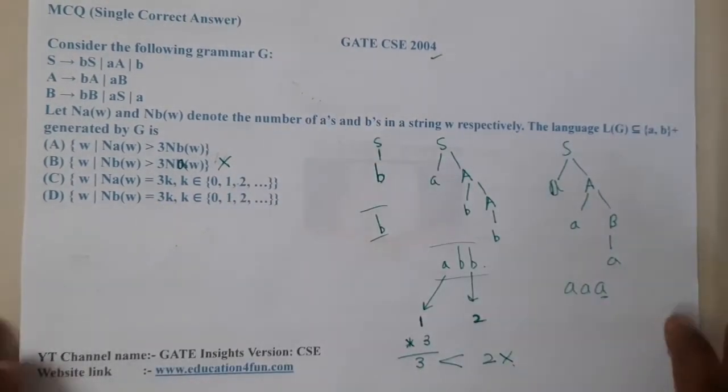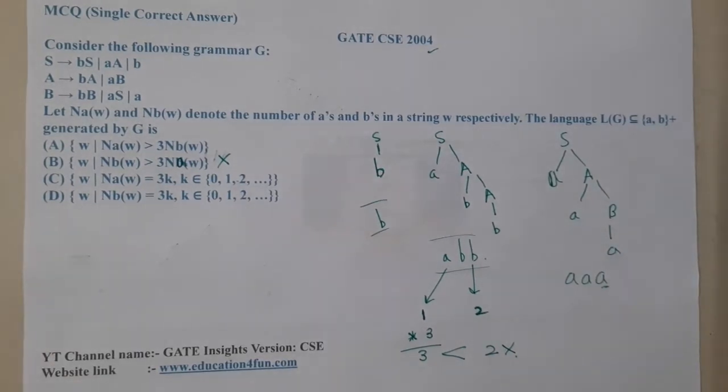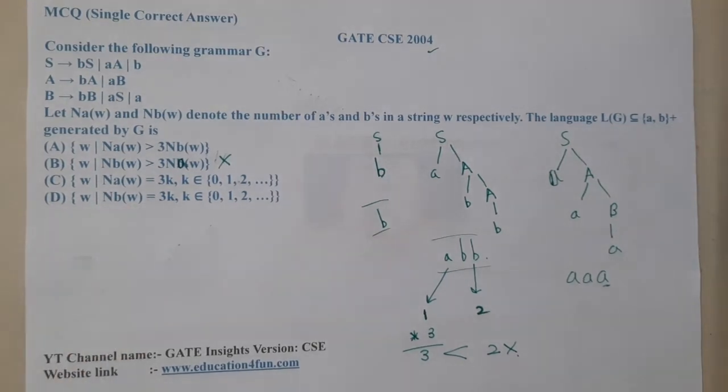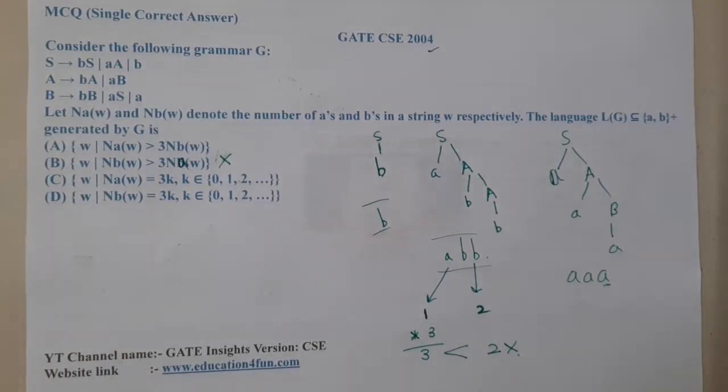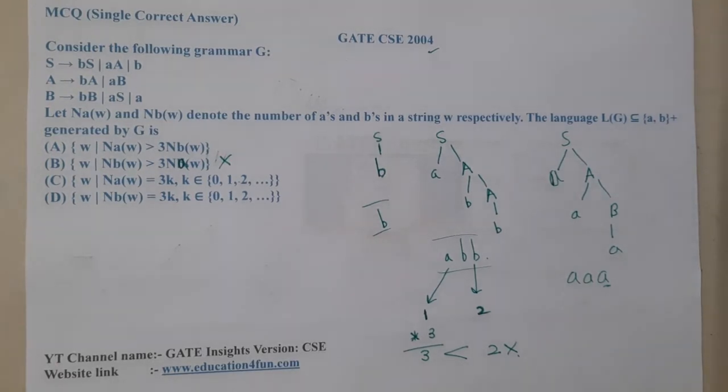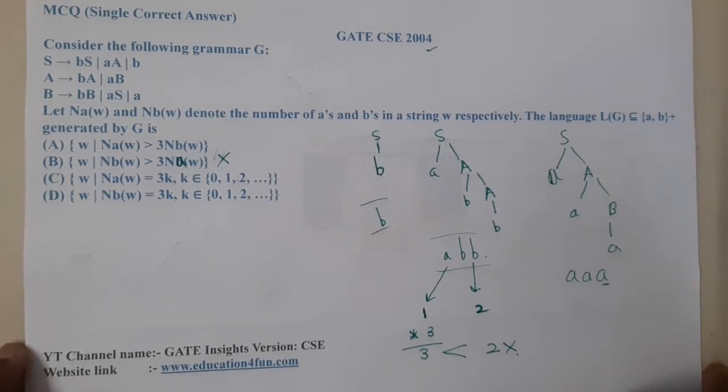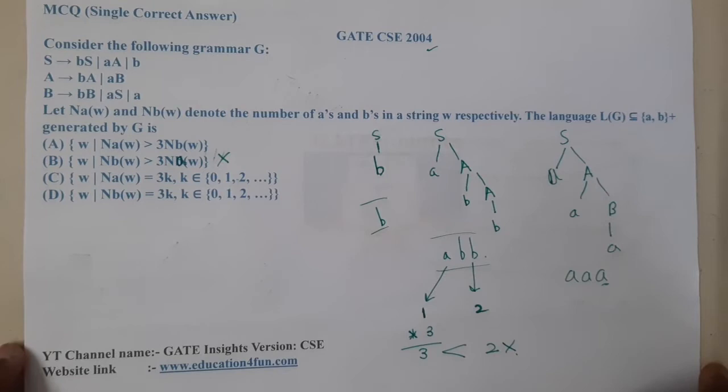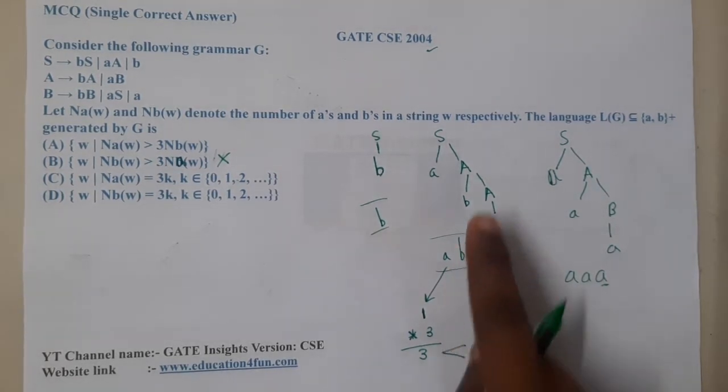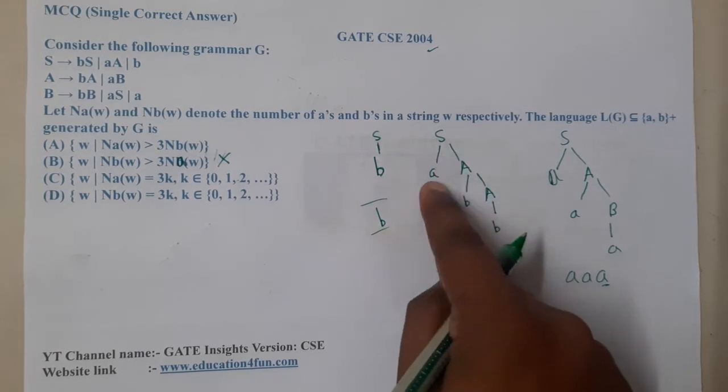Moving on to option C. Option C says that number of a's will always be equal to 3k. So are a's always in terms of three multiples? I think no. So this option also seems to be wrong because here I got singular.